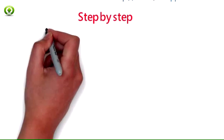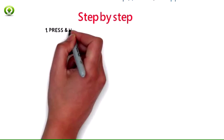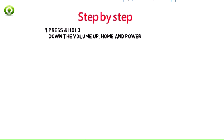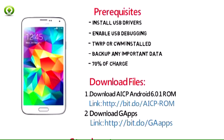How to update Galaxy S5 to Android 6.0.1 based AICP. 1. Reboot your Samsung Galaxy S5 into recovery mode by pressing and holding down the volume up, home, and power keys until the screen flashes. After a few seconds, your phone will enter recovery mode.